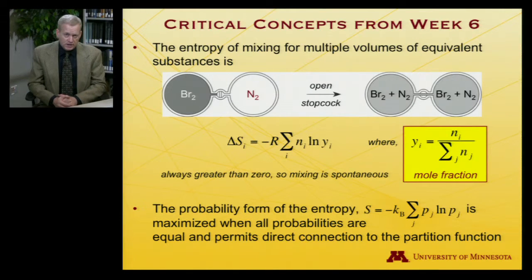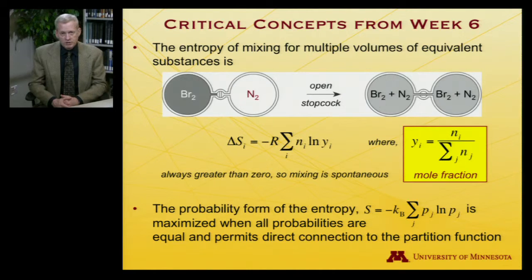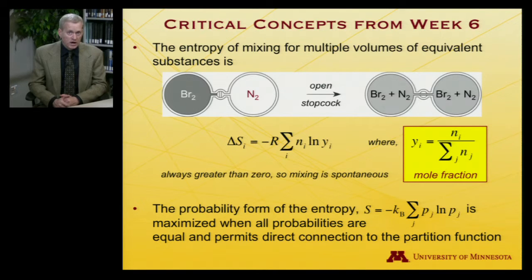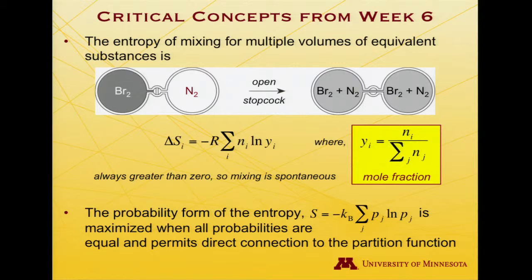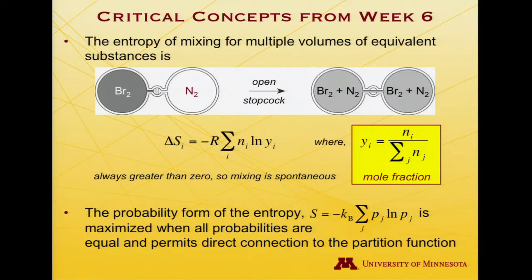We also looked at entropy of mixing, considering a mixture of gases. Using an example of two gases — bromine and nitrogen — you can express it more generally: the entropy of mixing is equal to minus R times the sum over all gases of n sub i, the number of moles of gas i, times the natural logarithm of the mole fraction of i — that is, how many moles of gas i there are out of the total moles present. There's a typo in the equation with an i subscript on entropy; this is the overall entropy of mixing. It's always greater than zero because the mole fraction is always less than one, so the logarithm is negative, all other quantities are positive, and there's a negative sign out front. Mixing is always spontaneous.